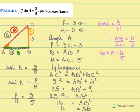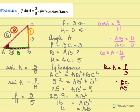Next we need to find tan A. Tan A — the definition for tan is perpendicular over base. Now for A, we have seen that the perpendicular is BC, so this is the perpendicular. And the base we saw is AB, because we are talking about this angle. So tan A is 3 over 4 — perpendicular over base.